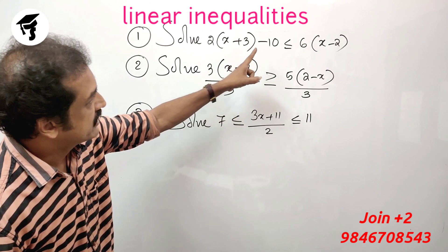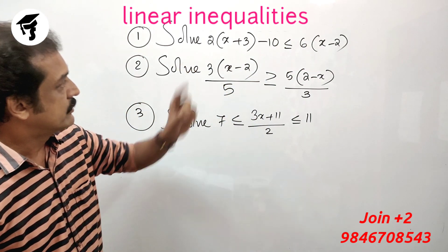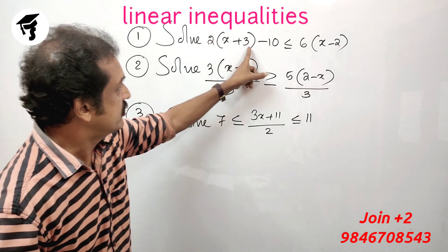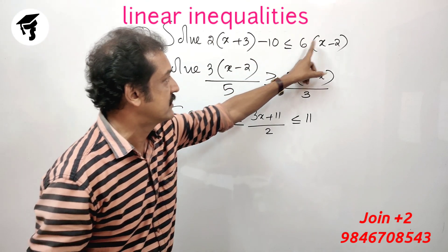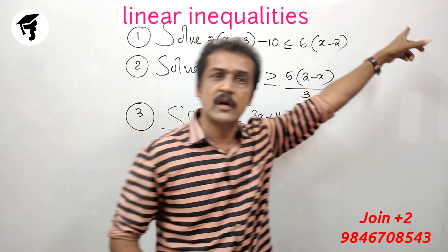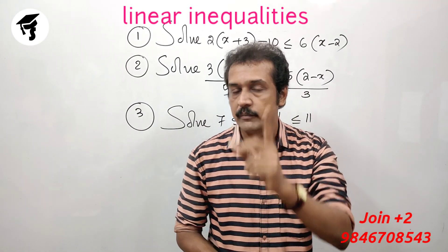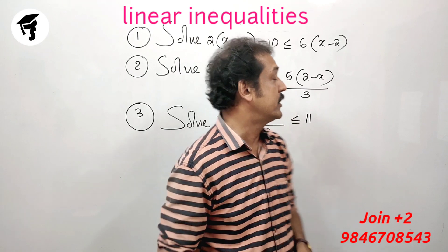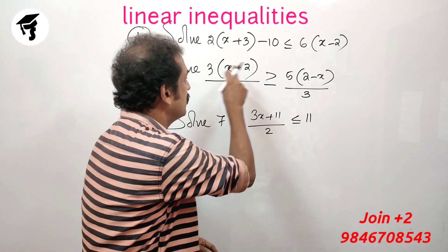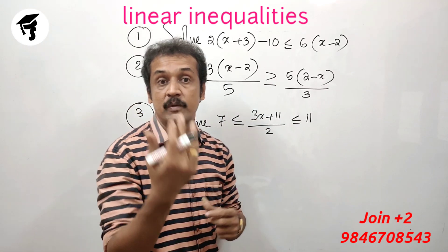Solve: 2 into x plus 3 minus 10 less than 1 is 6 into x minus 2. Now we will do this. Let's take this 2 as well. And the second part: 3 into x minus 2 by 5 greater than or equal to 5 into 2 minus x by 3.